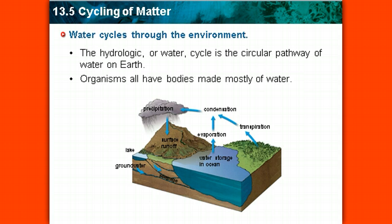One of the first things we're going to learn about is the water cycle. This is the first of what we call a biogeochemical cycle, because not only is it a chemical compound, but it cycles through the biotic aspect of the ecosystem — it goes through the organisms. All living things require water. And then it also cycles through the geography, the abiotic portion of the habitat. The water cycle, or the hydrologic cycle, is the circular pathway of water on Earth.